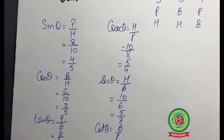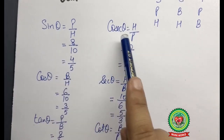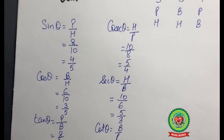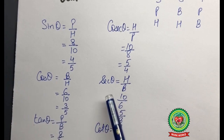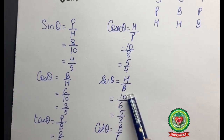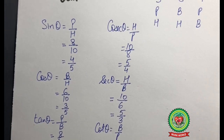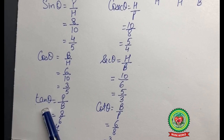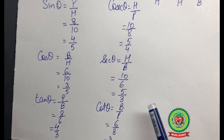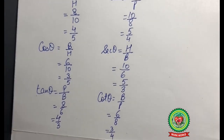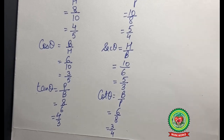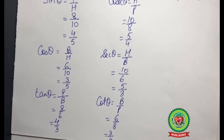For the other three trigonometrical ratios, we know they are the reciprocals of the first three. The reciprocal of sine theta is cosecant theta, which equals H upon P — substituting and simplifying gives 5 upon 4. The reciprocal of cosine theta is secant theta, which equals H upon B — substituting and simplifying gives 5 upon 3. The reciprocal of tangent theta is cotangent theta, which equals B upon P — substituting and simplifying gives 3 upon 4.